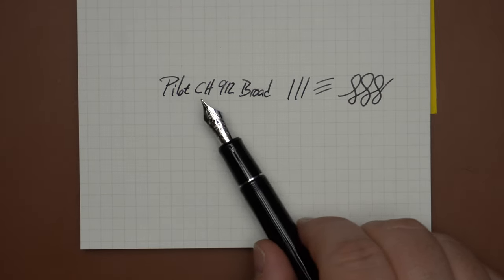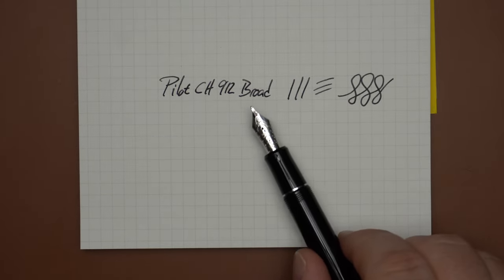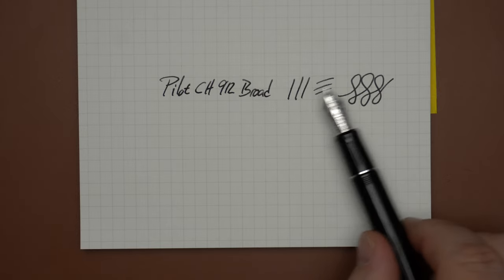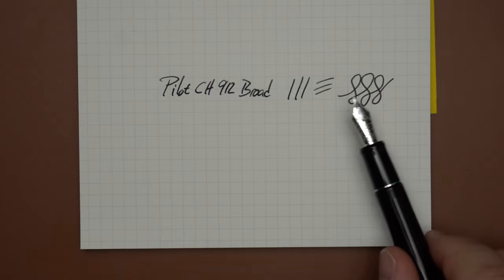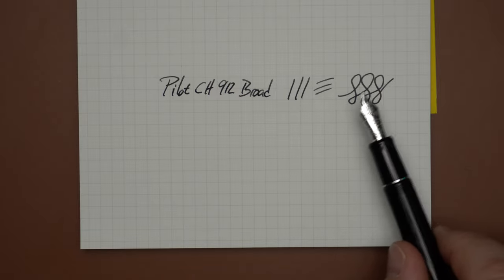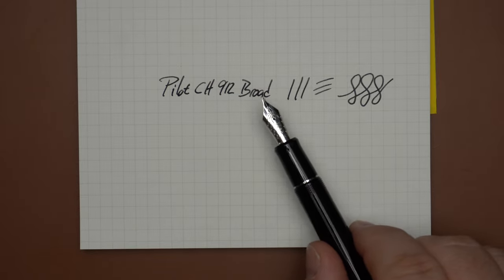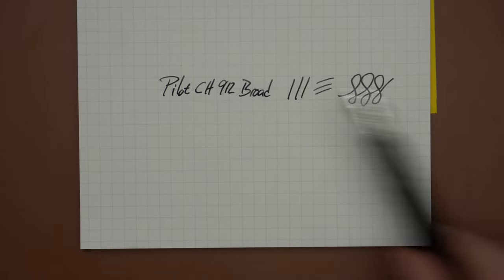The first in our series, the broad nib here, gives you a really nice line weight. You don't get any line variation. This is a round-tipped nib, so verticals and horizontals will be the same, but it does have a nice, generous flow. It gives you a nice line. I like a nice broad nib, and this is a really nice broad nib.